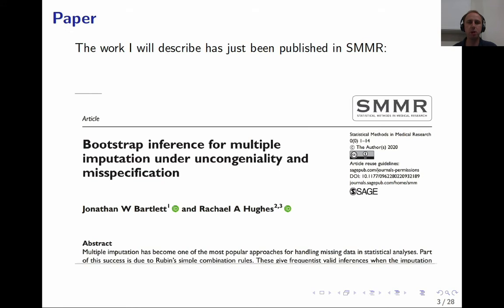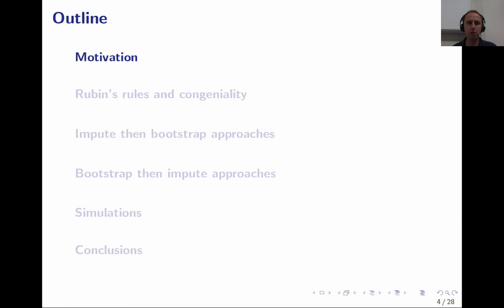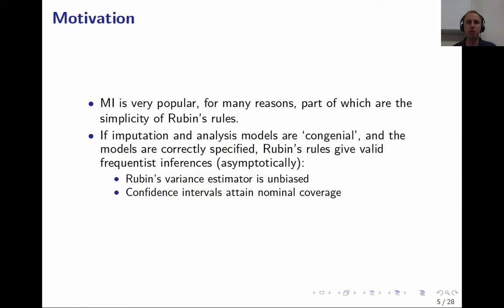The work I'm going to describe today has just been published in the journal Statistical Methods in Medical Research, and you can see the information about the paper here. Multiple imputation is very popular, and many of the reasons it's popular for handling missing data relate to the simplicity of Rubin's combination rules.